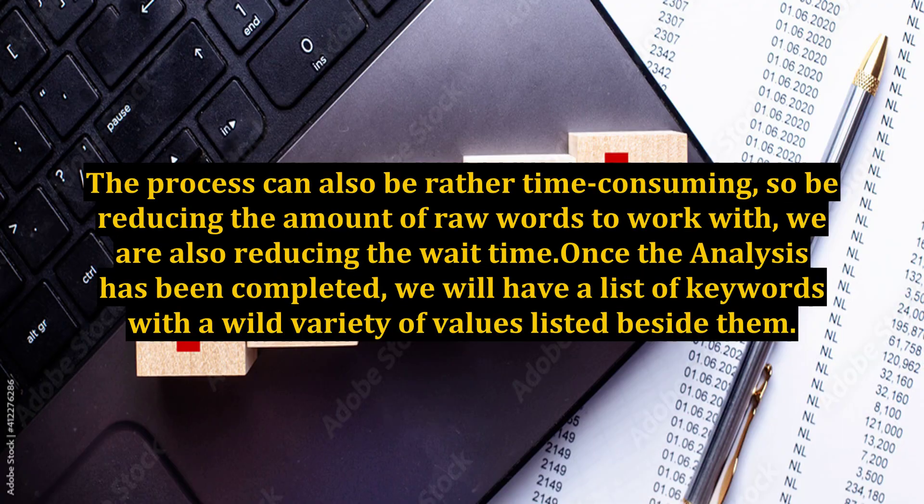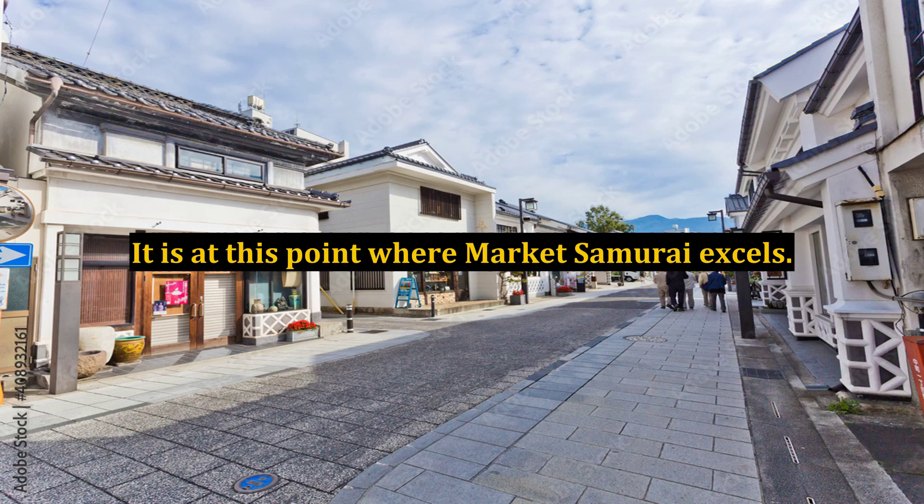It is at this point when we can then select the analyze keywords button. This will get the required raw data from Google and assist us in narrowing down our keyword list by a filter selection. The process can also be rather time consuming, so by reducing the amount of raw words to work with, we are also reducing the wait time. Once the analysis has been completed, we will have a list of keywords with a wide variety of values listed beside them. It is at this point where Market Samurai excels.